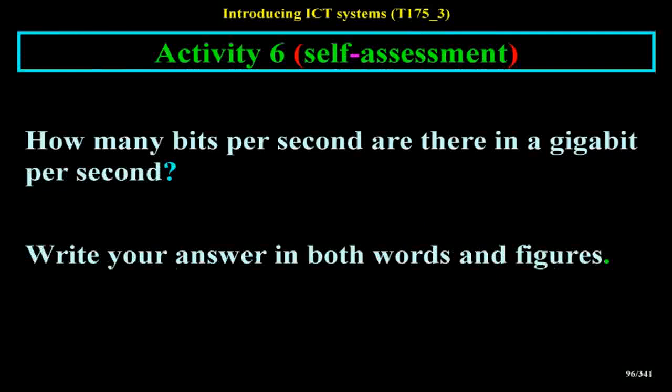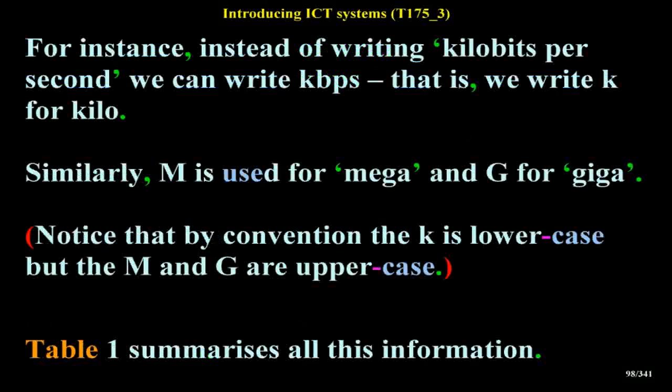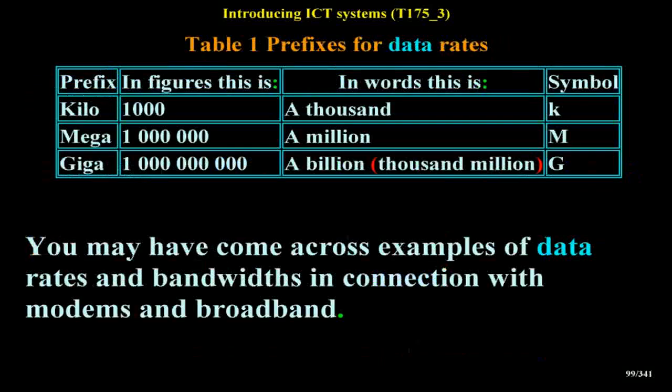Activity 6 Self-Assessment: How many bits per second are there in a gigabit per second? Answer: There are a billion bits per second in a gigabit per second — in figures this is 1,000,000,000. All of these prefixes have standard abbreviations: instead of writing kilobits per second we can write kbps. Similarly, M is used for mega and G for giga. Notice that by convention the k is lowercase but the M and G are uppercase. Table 1 summarizes this information.